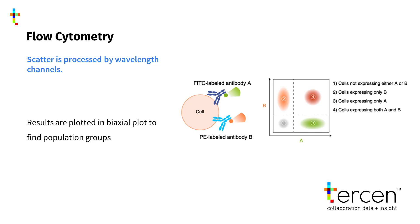The signal processor converts the information into channels, and these channels are usually displayed in a biaxial plot. Each cell has a set of markers, and cells which belong to a population group will have similar markers. Finding these populations is usually the objective of a cytometry experiment.